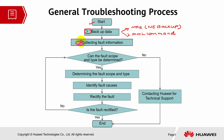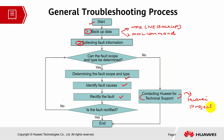Later on, we have to collect some fault information and verify the fault scope and types. If we are able to find out the fault scope and the time, we have to determine, identify, and rectify it. We have to see whether the fault is rectified or not at the end; else we might need to repeat the process again. On the other hand, if we are not able to find the scope and determine the cause, we have to contact the Huawei Technical Support team or the Huawei project team for further advice.